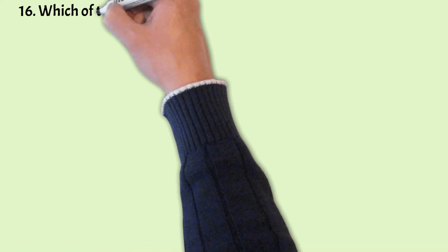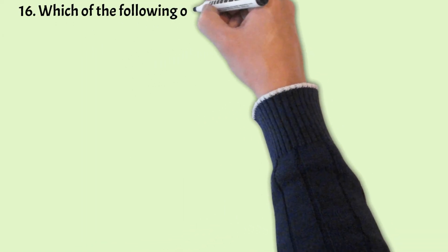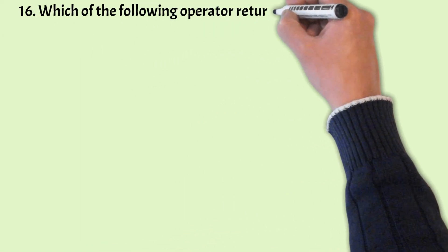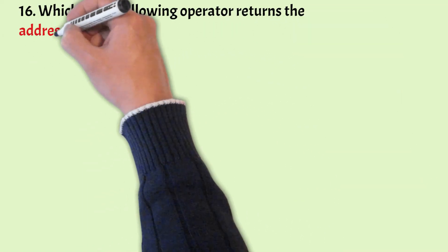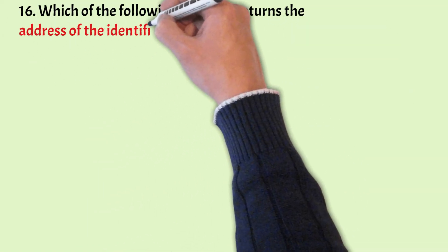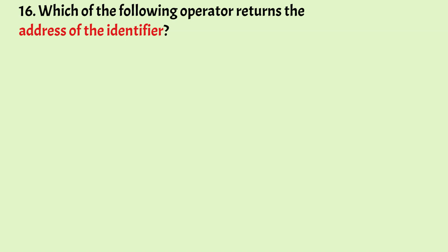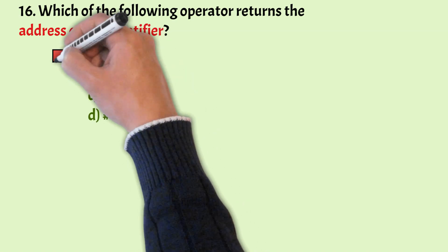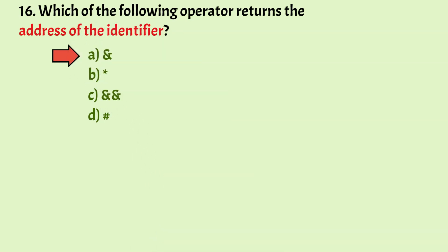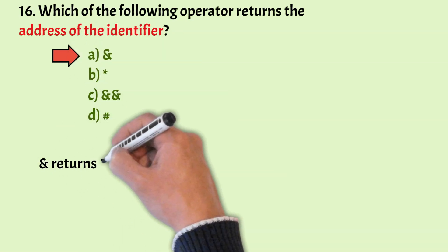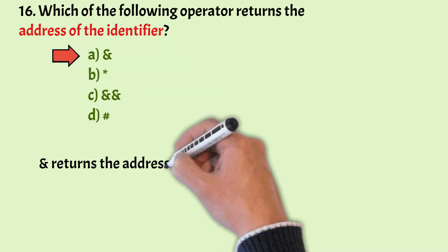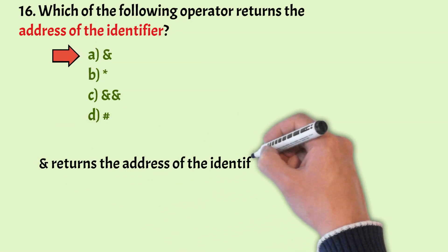Which of the following operator returns the address of the identifier? The correct answer is option A, that is the & (ampersand) operator. The & operator returns the address of the identifier.